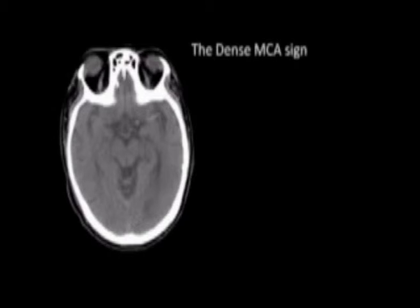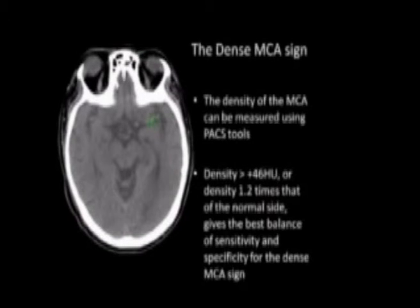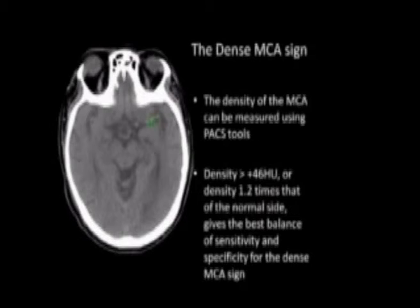The density of the MCA can be measured using PACS tools. A density greater than 46 Hounsfield units, or 1.2 times that of the normal side, gives the best balance of sensitivity and specificity for the dense MCA sign.